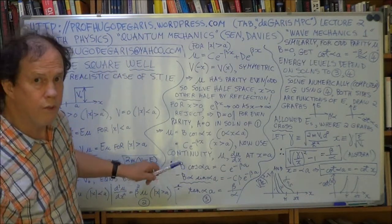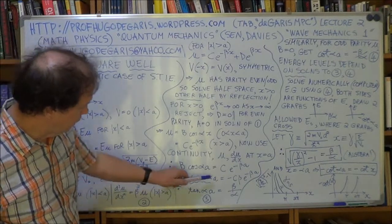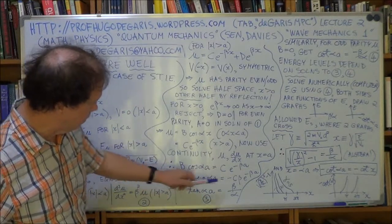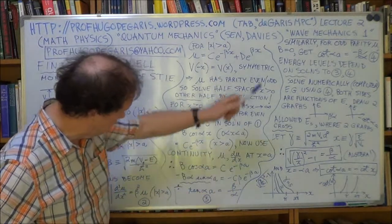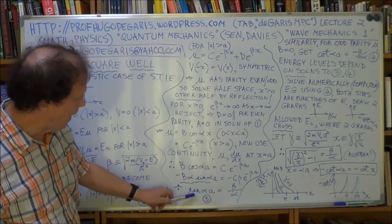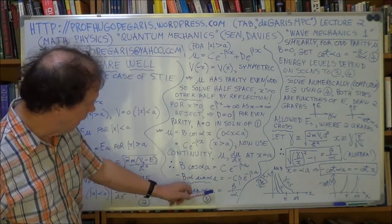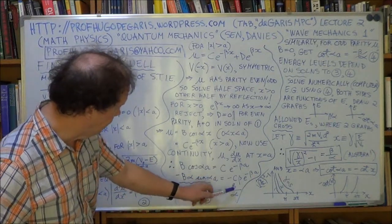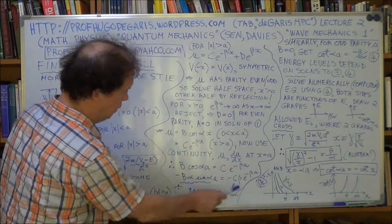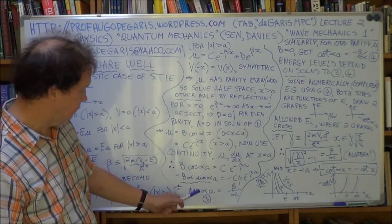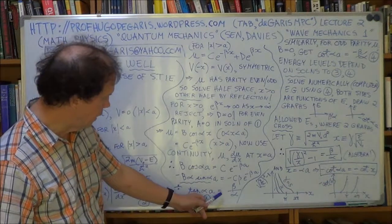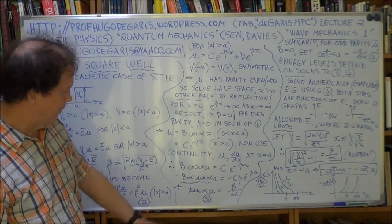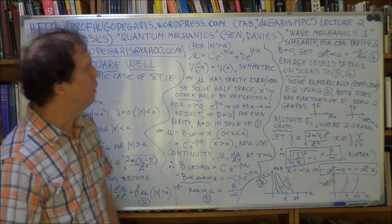And differentiate this with respect to x and you'll get minus beta c, whatever. Do that for homework. Now, take this equation here and divide by this one. So the b's cancel, the c's cancel, the exponentials disappear. And you end up with getting just tangent, tan of alpha a, is equal to beta over alpha. So call that equation three. So tangent of alpha a equals beta over alpha. Now, so we've deduced that much.